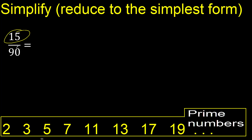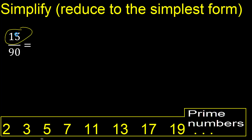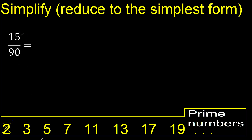15 and 90 cannot be divided by 2, because the last digit is not even. Therefore 15 cannot be divided by 2. Divided by 3 — yes, 15 can be divided by 3.